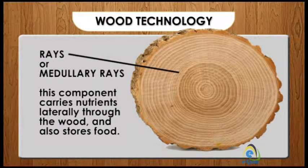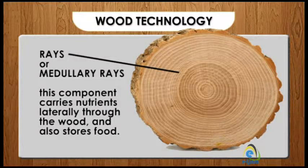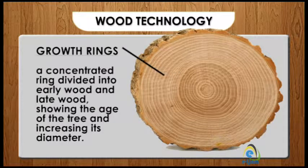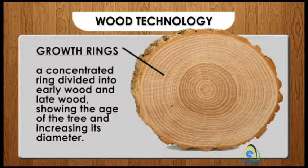Four: rays or medulla rays — this component carries nutrients laterally through the wood and also stores food. Five: growth rings or annual rings — a concentrated ring divided into early wood and late wood, showing the age of the tree and increasing its diameter.